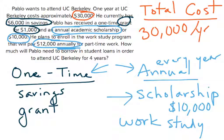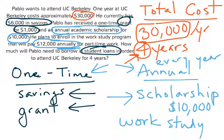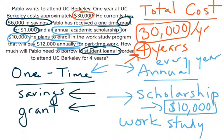How much will Pablo need to borrow in student loans to attend UC Berkeley for four years? The total cost is four years of college, so make sure you multiply $30,000 per year times four years. Then you subtract your one-time payments — savings and grants. If a scholarship or work-study is one-time, subtract it there too. Your annual amounts are subtracted for every year. So the $10,000 scholarship over four years would be $40,000 total.